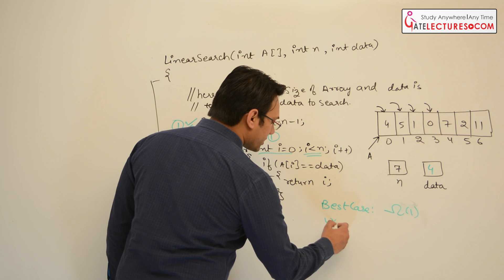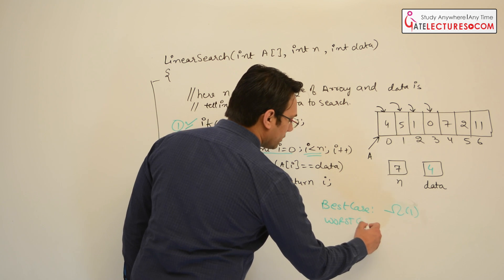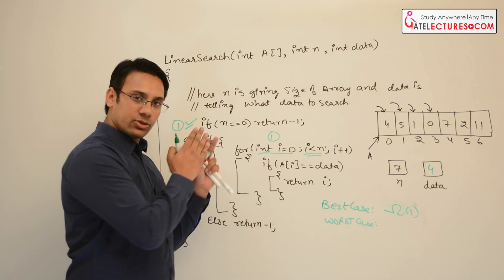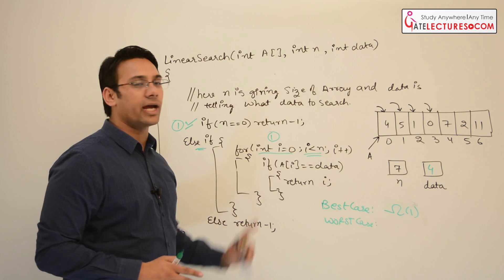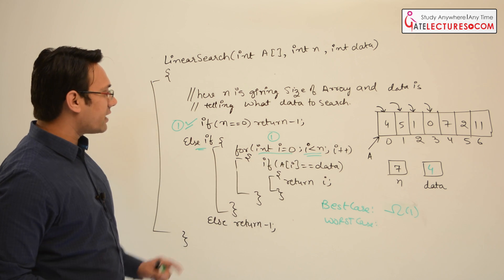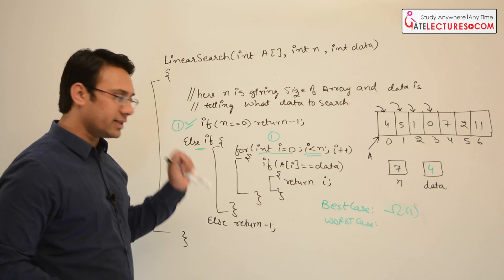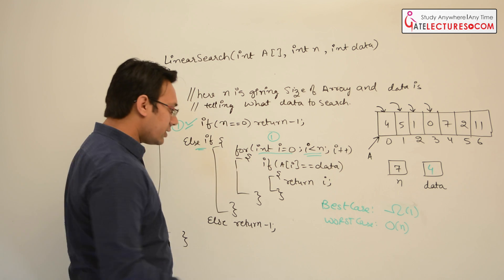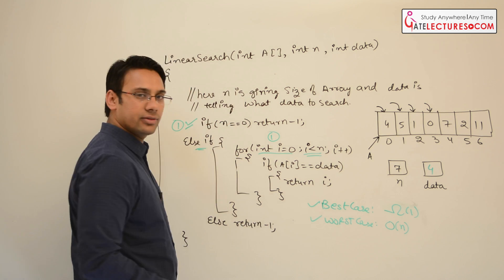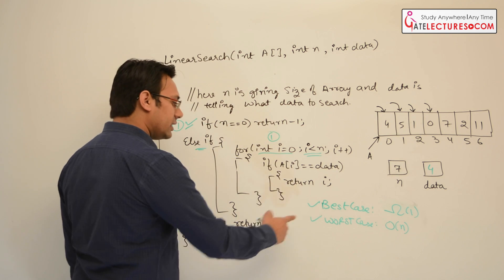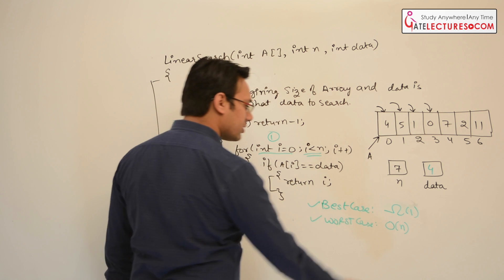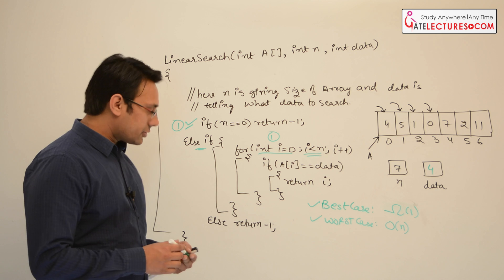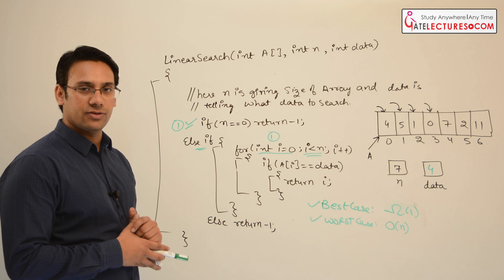The worst case is when the for loop executes completely from beginning to end — meaning we check all index locations and still cannot find the data. In that case the program takes O(n) time in the worst case. Since the best case is Omega(1) and the worst case is O(n), they are not the same, and therefore we cannot assign a Theta notation to the linear search in general.